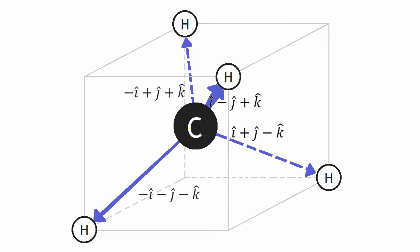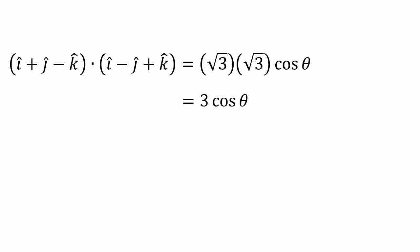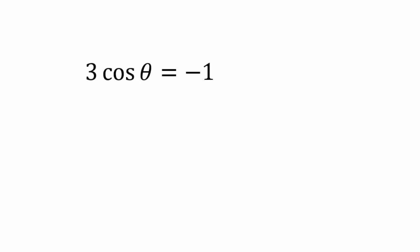Knowing the four vectors from the cube, we do the same as before: compute the dot product between two vectors. The product of their magnitudes (√3 × √3) times cosine theta equals 3 cosine theta. Computing the dot product component-by-component gives negative one. Setting these equal: 3 cosine theta equals negative one, so cosine theta equals negative one-third, giving 109.5 degrees again.